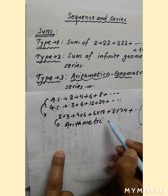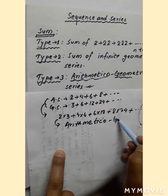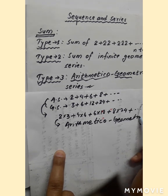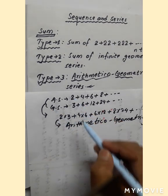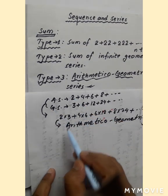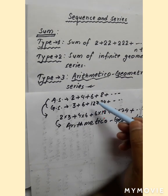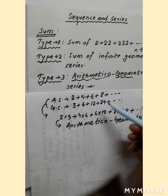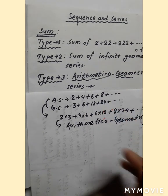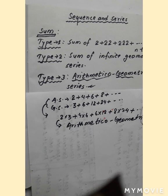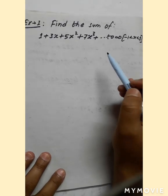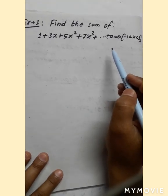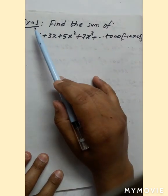We can also divide the corresponding terms: 2/3 + 4/6 + 6/12 + 8/24 + ... and that is also an arithmetico-geometric series. Now let us find the sum of an arithmetico-geometric series.